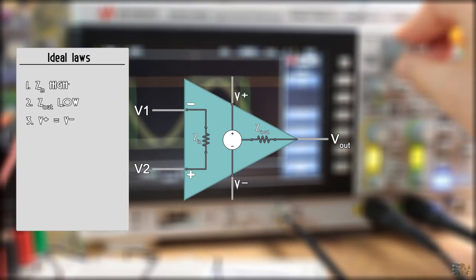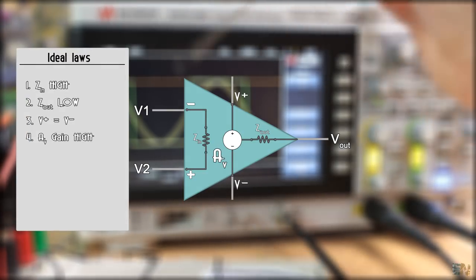Finally, one more ideal law, the gain of an operational amplifier is very big, or almost infinite.